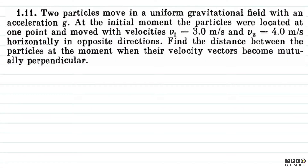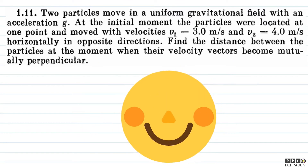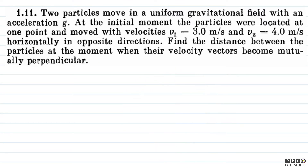Let's have a look at this beautiful problem from Irodov. The question says: two particles move in a uniform gravitational field with acceleration g. At the initial moment, the particles were located at one point and moved with velocities v1 equal to 3 m/s and v2 equal to 4 m/s horizontally in opposite directions. Find the distance between the particles at the moment when their velocity vectors become mutually perpendicular.